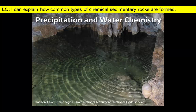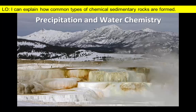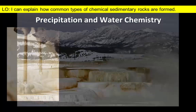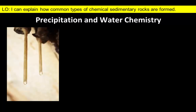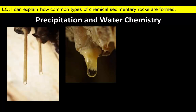Minerals are also dissolved in lesser concentrations in groundwater and freshwater lakes and rivers, and are also concentrated in hot waters associated with thermal features such as hot springs and geysers. Precipitation in these cases occurs when there are small changes in water chemistry — for example, water evaporates in caves to leave behind limestone deposits.